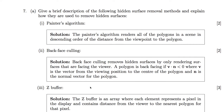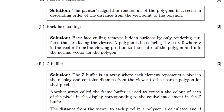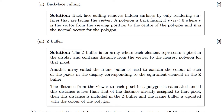Question 7 is about hidden surface removal. Painter's algorithm renders all polygons in a scene in descending order by distance from the viewpoint — furthest polygons rendered first, closest last. Backface culling ignores any polygons facing away from the viewer (normal vectors pointing away). We determine this by checking if the dot product between the viewing vector and n is negative, indicating a front-facing polygon.